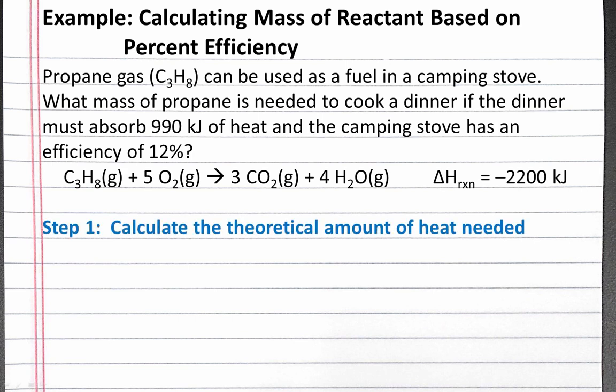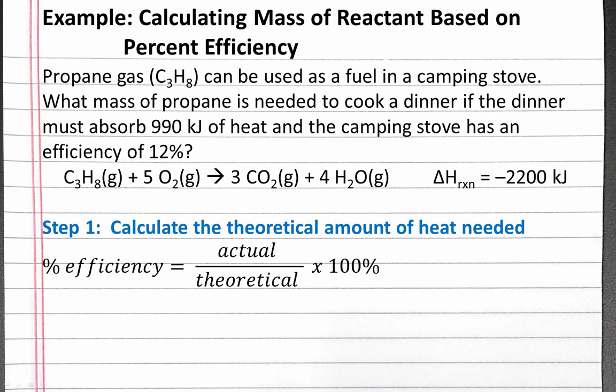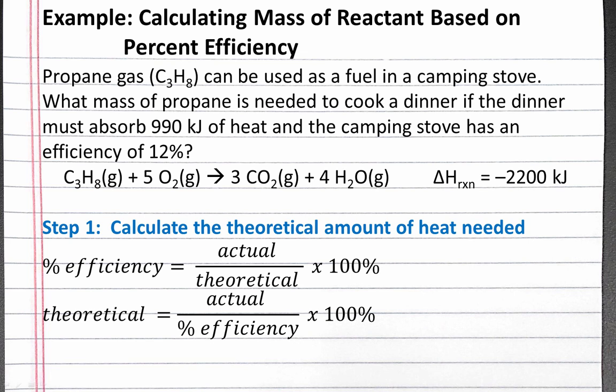Our first step will be to calculate the theoretical amount of heat that we need. We can use our percent efficiency equation, where percent efficiency equals the actual amount of heat divided by the theoretical amount of heat times 100%. We'll rearrange this equation so that the theoretical amount of heat equals the actual amount of heat divided by percent efficiency times 100%.